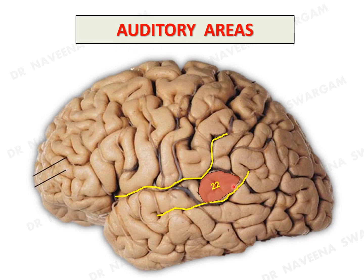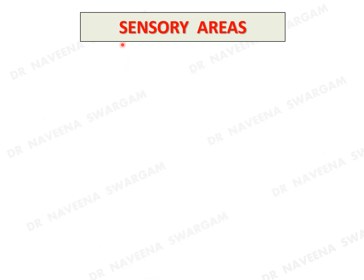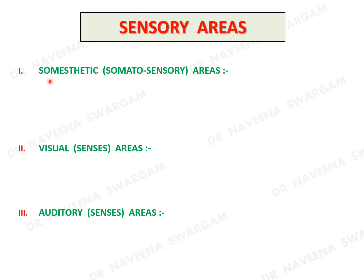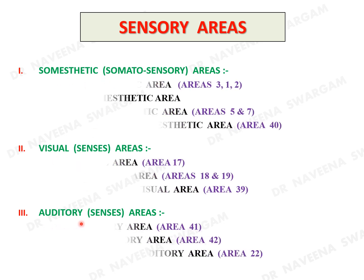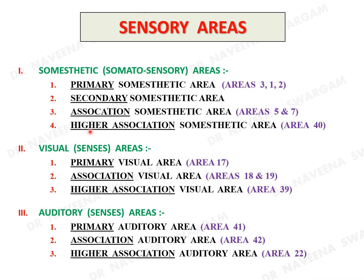The higher association auditory area, higher association visual area, and higher association somesthetic areas are grouped together to integrate and interpret information perceived through tactile, visual, and auditory senses. The sensory areas are grouped into somesthetic, visual, and auditory areas, each having primary, association, and higher association areas; the somesthetic area also has a secondary center.